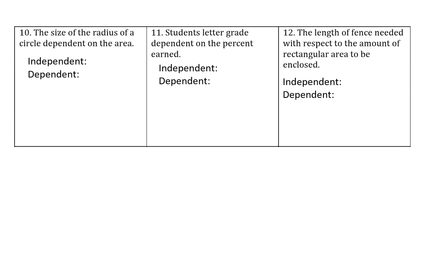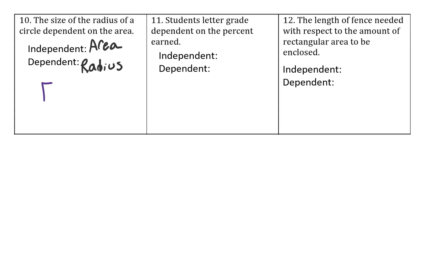Scrolling on down to 10, 11, and 12, the size of the radius of a circle dependent on the area. So the radius length of the circle is dependent on the area. So area is independent, radius is dependent. This is a function because we have the governing relationship for area of a circle that area equals pi r squared.